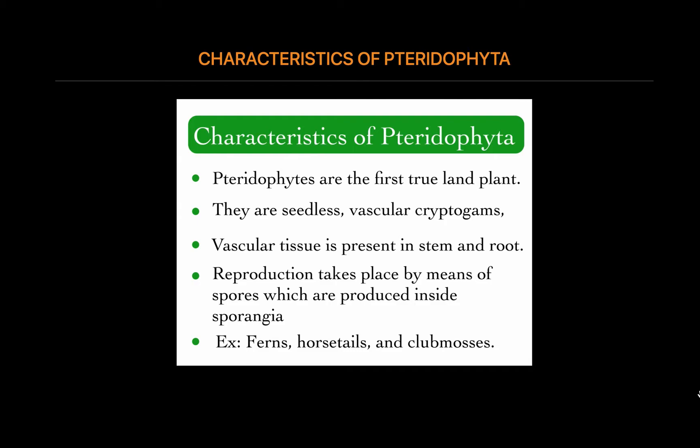The majority of living pteridophytes are terrestrial and prefer to grow in cool, moist, and shady places. Vascular tissue is present in stem and root; it consists of xylem and phloem. Xylem consists of tracheids only and phloem has only sieve tubes. Reproduction takes place by means of spores that are produced inside sporangia.